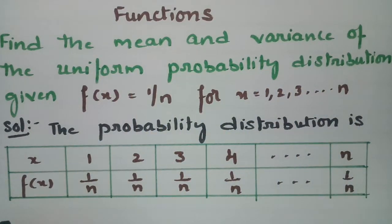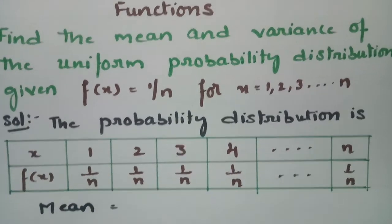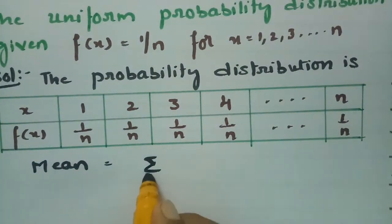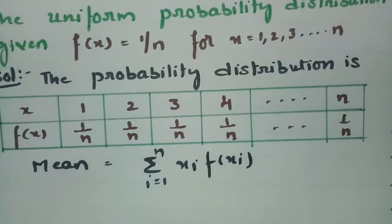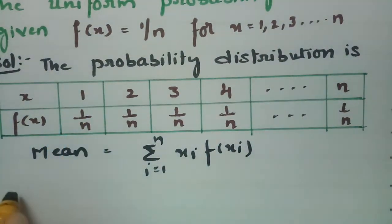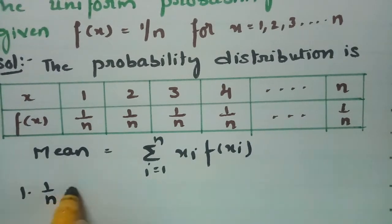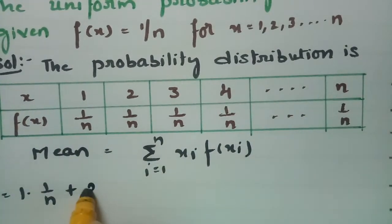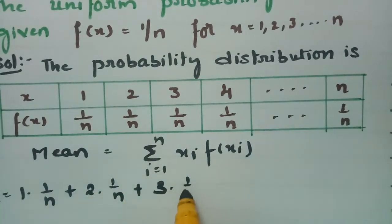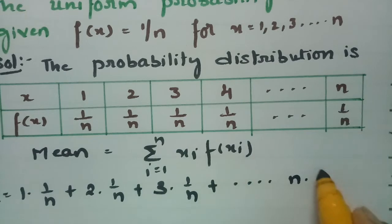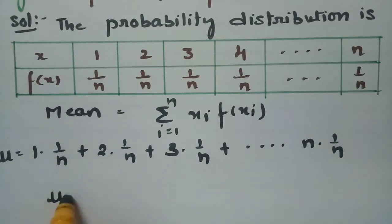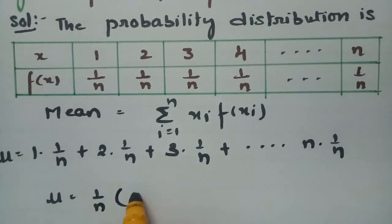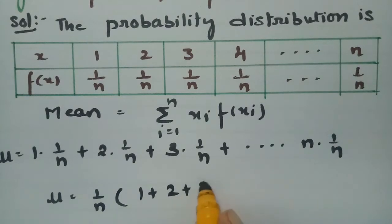For finding the mean, the formula is mu = Σ (i=1 to n) of x_i · f(x_i). We multiply each term: 1 × (1/n) + 2 × (1/n) + 3 × (1/n) + ... + n × (1/n). Taking 1/n as a common factor, what remains is 1 + 2 + 3 + ... + n.